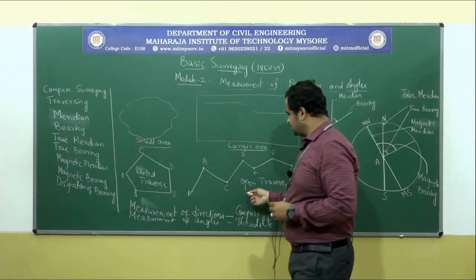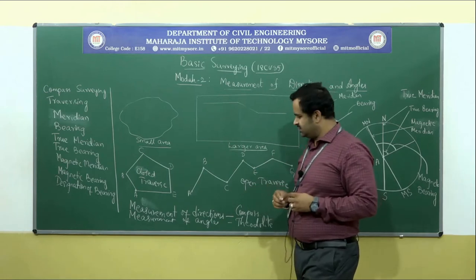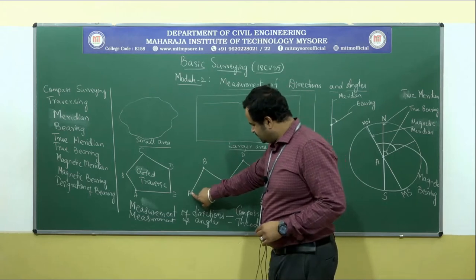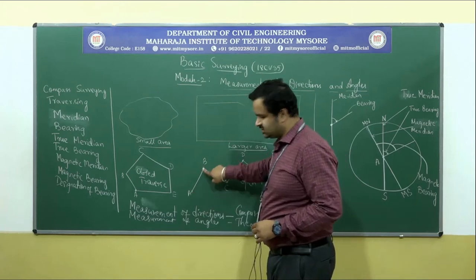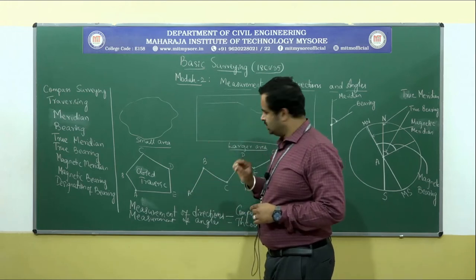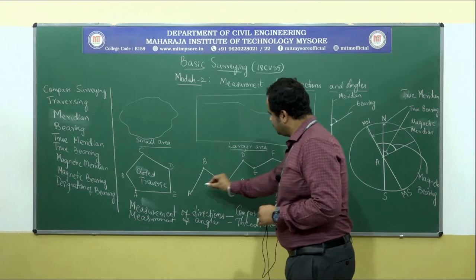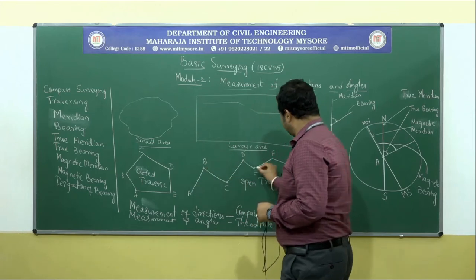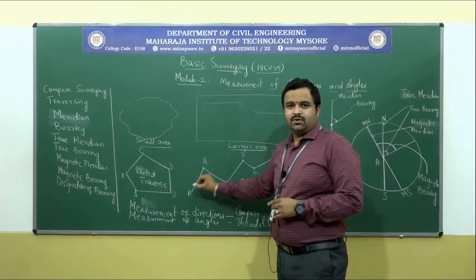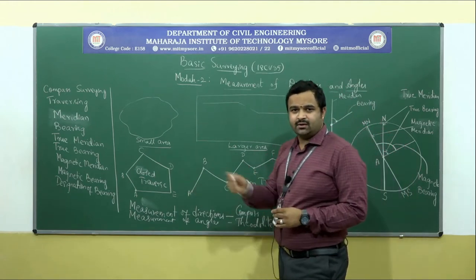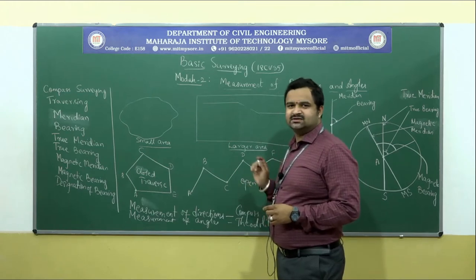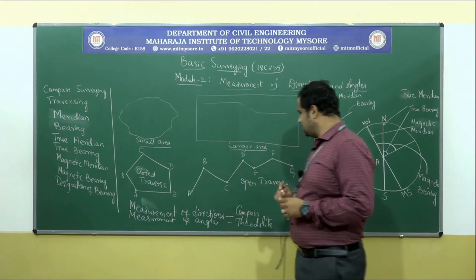Let me give you an example of open traverse. You start your traversing from A, measure from A to B, and the direction is measured from a compass. You will traverse from A, B, C, D, E, F, G — but you are not coming back to A. When you traverse across a river, this case arises — open traverse. This comes under open traverse. Closed traverse and open traverse will be dealt with in detail in the second unit of the same module.